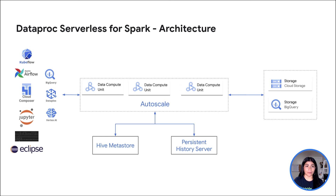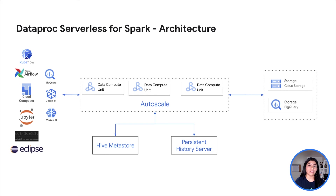Let's look at the architecture of Dataproc serverless for Spark. Serverless Spark automates the provisioning and auto-scaling of the infrastructure. Users submit Spark code and can provide Spark properties for any customizations. Each Spark executor maps to an abstract unit called a DataCompute unit, which represents one Dataproc vCPU plus 4GB of RAM. Billing is only for the duration the job runs. Serverless Spark works with both BigQuery and Cloud Storage. Users can attach a persistent history server to view Spark logs after the job is finished, and a Hive metastore as well. Once the job finishes, everything is cleaned up except the logs and persistent results.